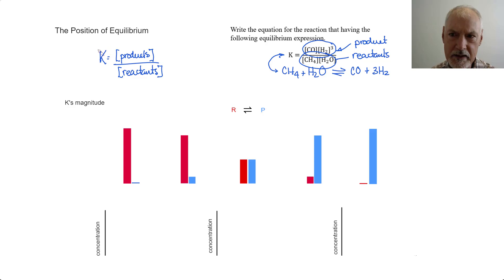But again, I want to go back to this. We need to recall, as we move into this unit, what K is equal to, and in general terms, products over reactants. So, here we have a simple equation where I have reactants forming products.